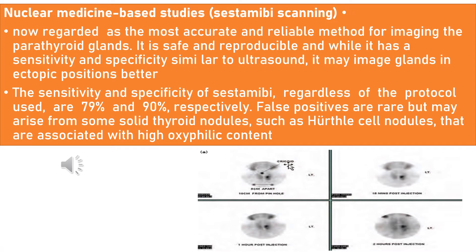Regarding imaging techniques, starting with nuclear medicine — sestamibi scanning is now regarded as the most accurate and reliable method for imaging the parathyroid gland. It is safe and reproducible, with sensitivity and specificity similar to that of ultrasound, but may image glands in ectopic positions better. The sensitivity and specificity of sestamibi, regardless of protocol, are 79% and 90% respectively. False positives are rare but may arise from solid thyroid nodules with high oxyphilic content. The image here shows a right inferior parathyroid gland adenoma on sestamibi scanning.